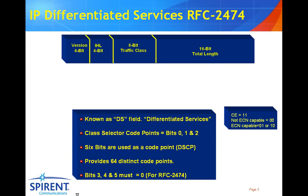Over the years, there have been a number of different mechanisms or RFCs for defining the type of service — that's what we originally called it — or class of service that the traffic was to experience when transmitted across the network. Today, we typically refer to the field which defines quality of service as the traffic class, and the popular mechanisms used today are typically referred to as differentiated services. RFC 2474 is perhaps one of the oldest mechanisms for defining the quality of service of your packets as they move across the network.